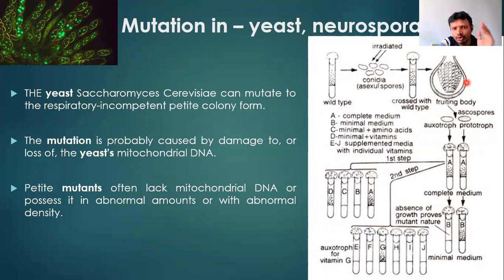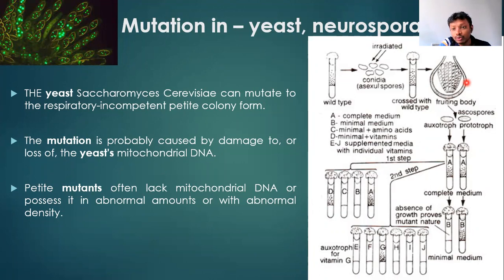These organisms have provided scientists with many different mutant types which can be easily grown, cultured, and observed in the laboratory. To use yeast or Neurospora in the lab, we have to screen the mutants. There are two types of mutants in these organisms: nuclear mutants and mitochondrial mutants. Nuclear mutants are divided into auxotrophs and their counterparts, the prototrophs.